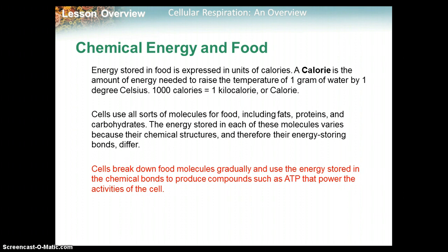Energy stored in food is expressed in calories. A calorie with a capital C is the amount of energy needed to raise the temperature of one gram of water by one degree Celsius. A thousand calories is a kilocalorie, or what we refer to as a Calorie with a capital C. Cells use all sorts of molecules for food, including fats, proteins, and carbohydrates. The energy stored in each of these molecules varies because of their chemical structures and the number of bonds they have.